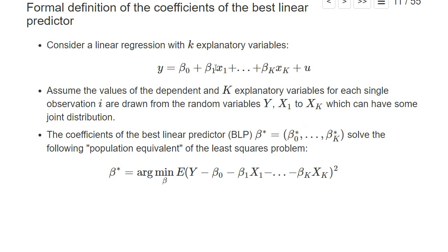And this beta star, the coefficients of the best linear predictor, are basically those values of the beta that minimize the expected value of the square of the error term. And that's essentially the population equivalent of the least squares problem.